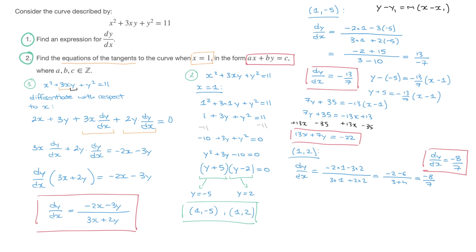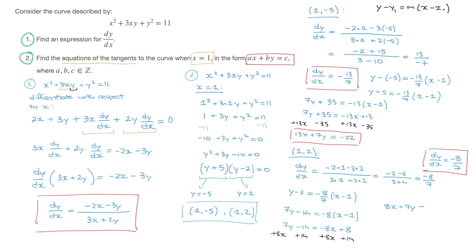Using the same point-slope formula, we get y minus 2 equals negative 8 over 7 times (x minus 1). Multiplying both sides by 7 gives 7y minus 14 equals negative 8(x minus 1). Distributing gives 7y minus 14 equals negative 8x plus 8. Adding 8x and 14 to both sides gives the final answer: 8x plus 7y equals 22.